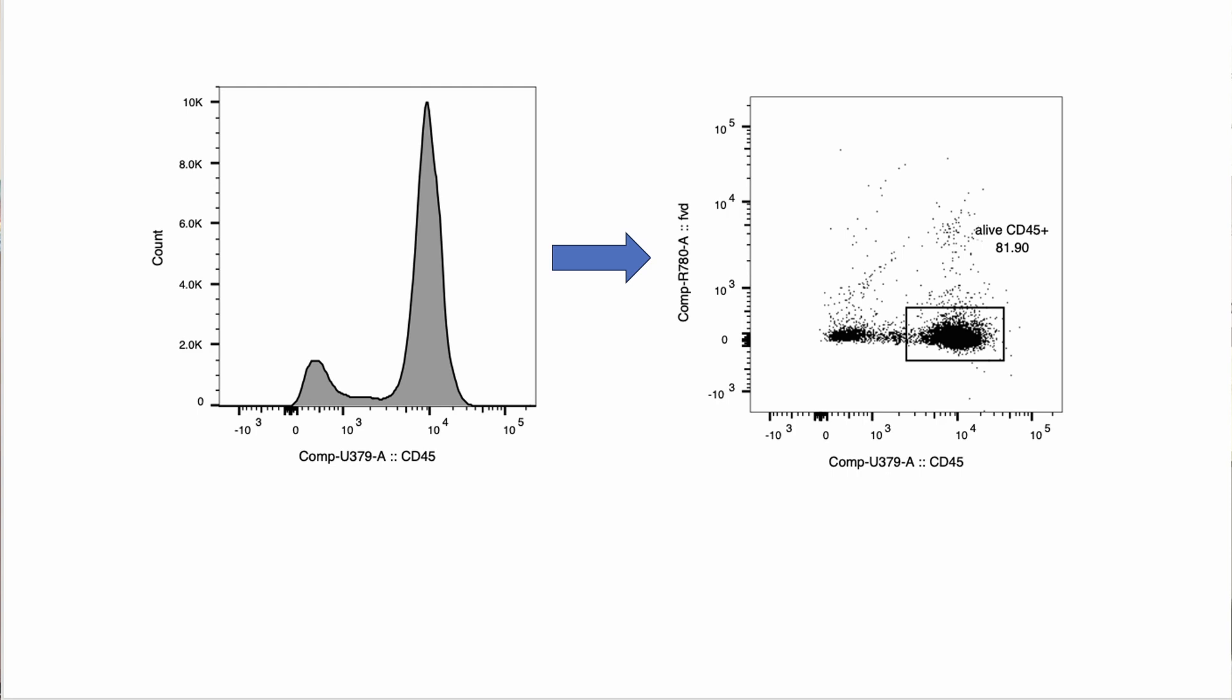So in this case with CD45 and our fixable viability dye, we use this to find our alive CD45 cells because these cells will be high for CD45 expression. So they're going to be on this brighter side of the fluorescent scaling and they're going to be negative for our fixable viability dye. So we'll have a low level of fluorescence expression in that channel.